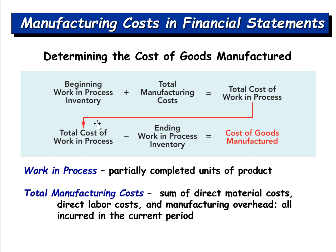To determine cost of goods manufactured, we start with beginning work in process inventory — work that has been started but not yet completed. Going back to the Tesla example: a car where the frame has been produced but hasn't been painted or had the motor or seats installed yet — that's beginning work in process. We add total manufacturing costs for the period — direct materials, direct labor, and manufacturing overhead — to get total cost of work in process, then subtract ending work in process inventory to get cost of goods manufactured.